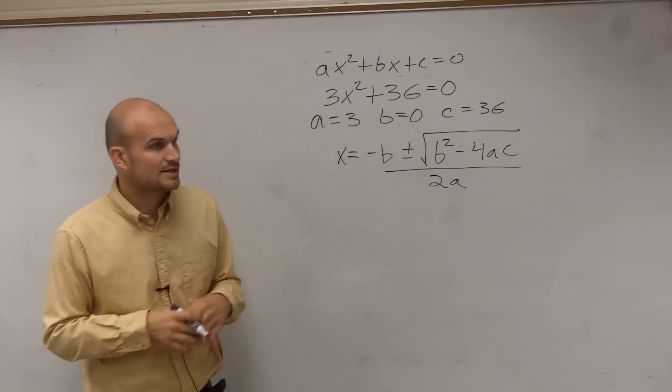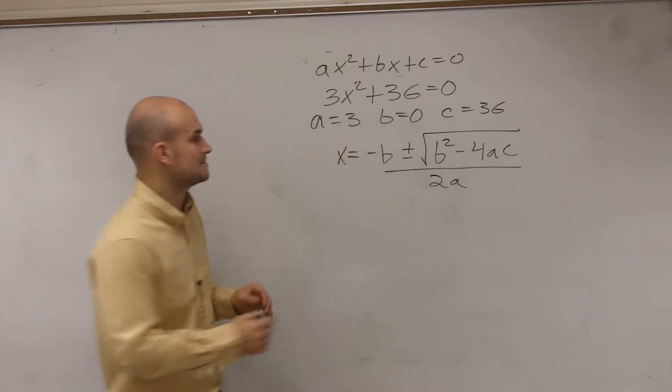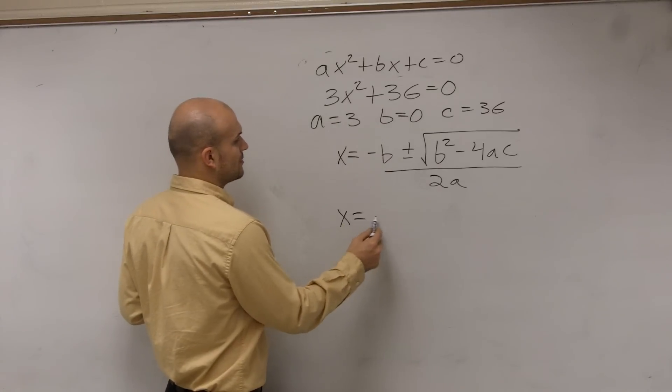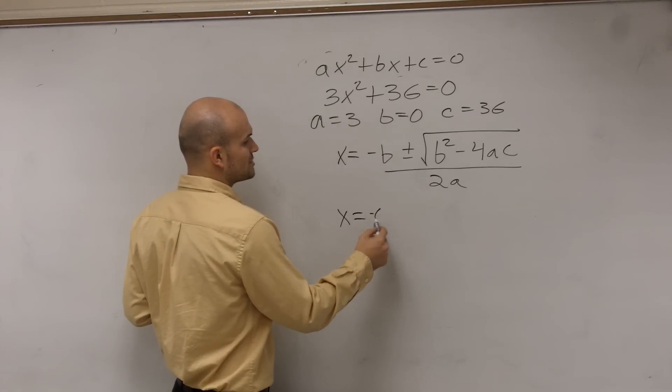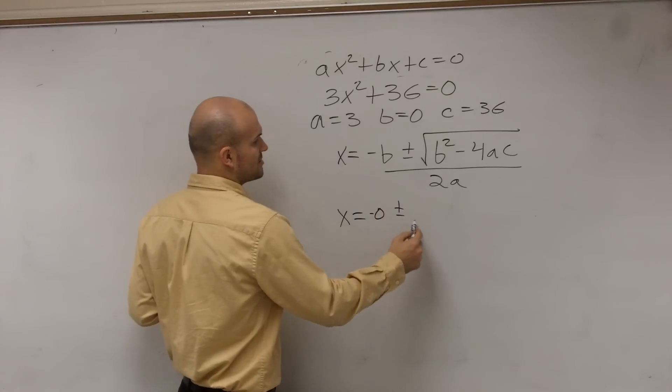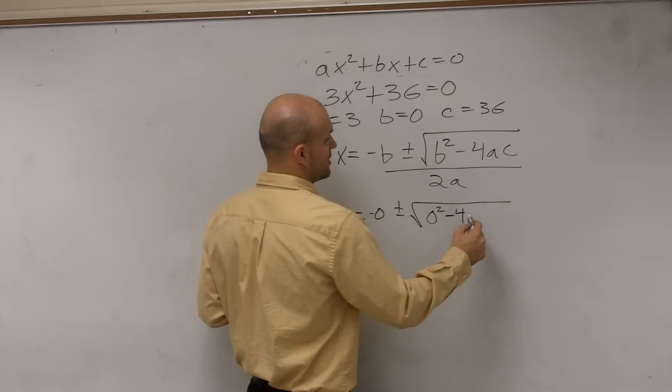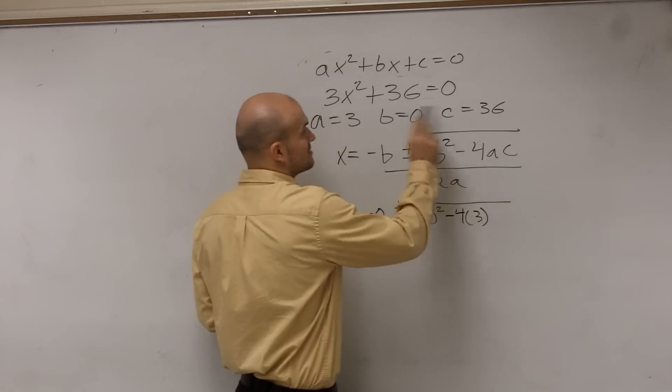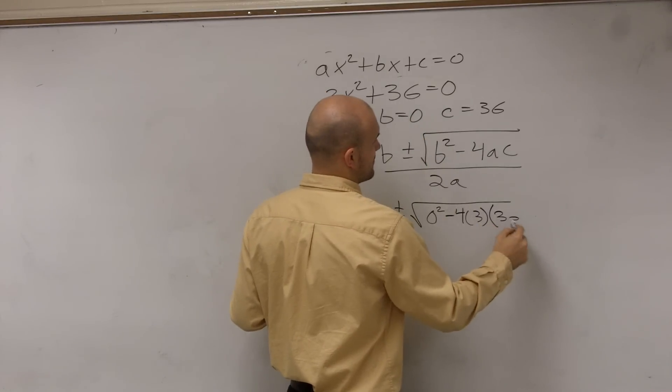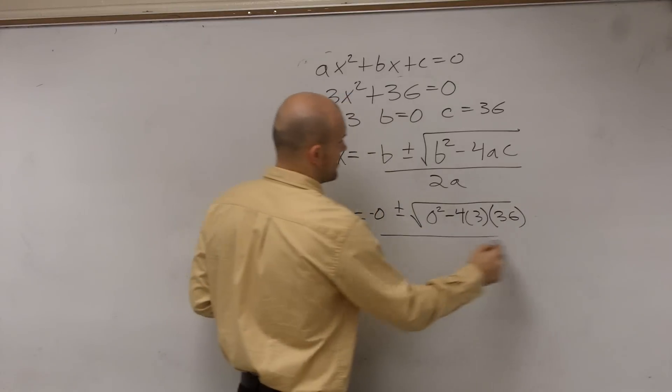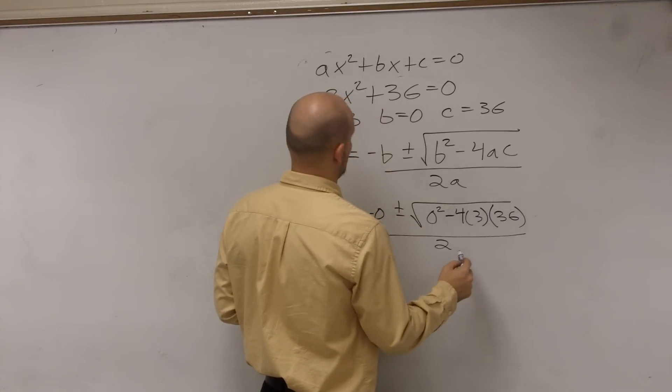So now, what we need to do is just plug in our values. So x equals opposite of 0, which is just 0, plus or minus the square root of 0 squared minus 4 times 3 times c, which is 36, all divided by 2 times a, which is 3.